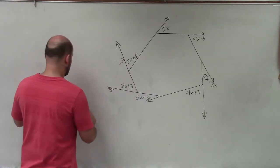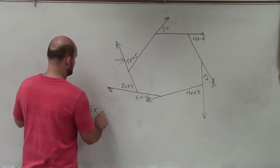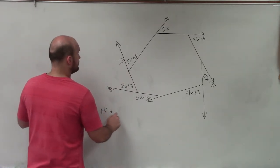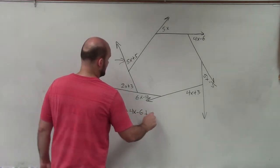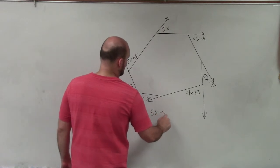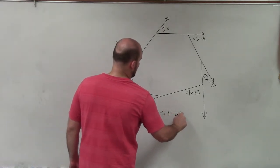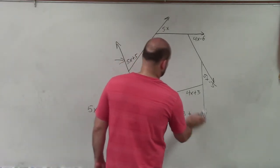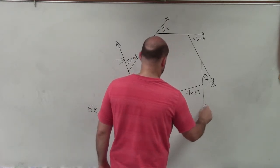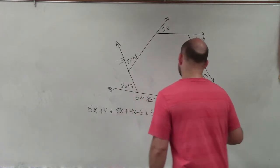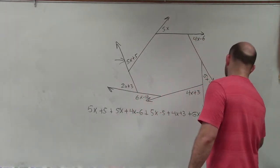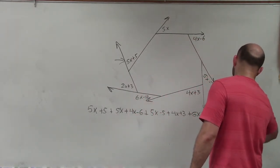So I'll start right here and I'm just going to start writing a big equation. I'll say 5x plus 5 plus 5x plus 4x minus 6 plus 5x minus 5 plus 4x plus 3 plus 6x minus 12 plus 2x plus 3 equals 360.